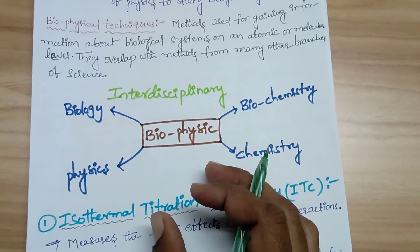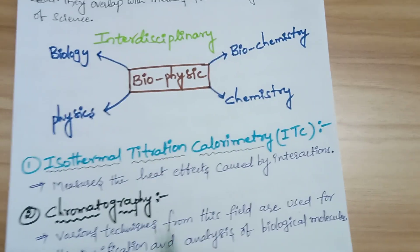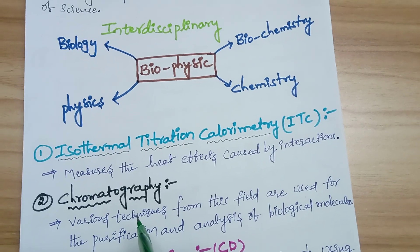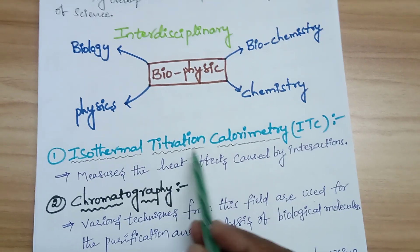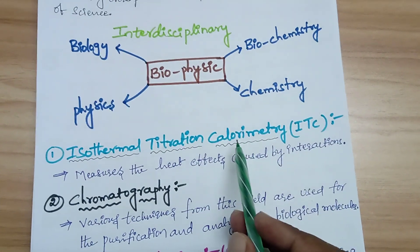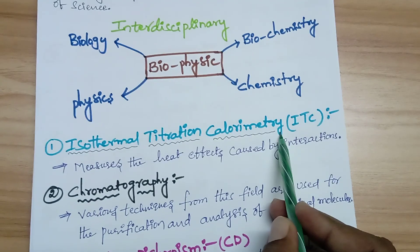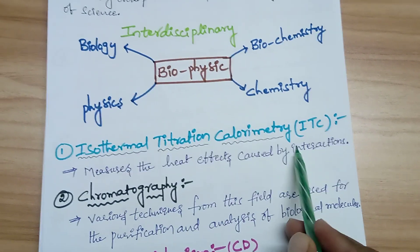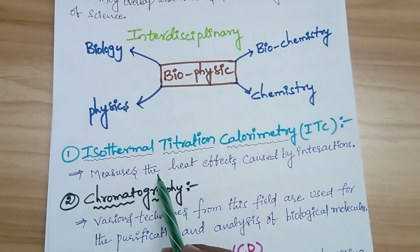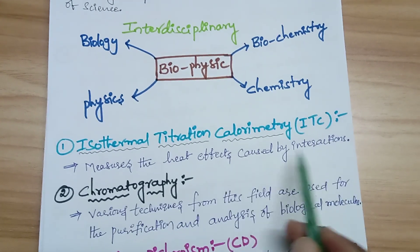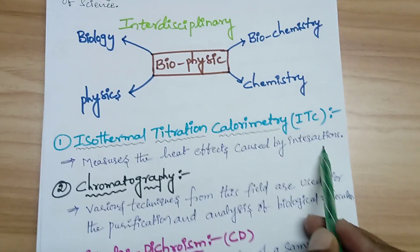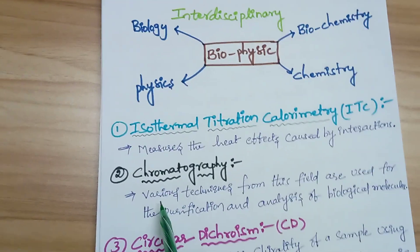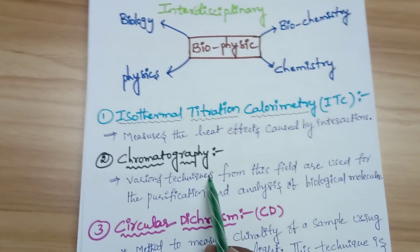The first biophysical technique is ITC — Isothermal Titration Calorimetry. The main purpose of isothermal titration calorimetry is to measure the heat effects caused by interactions, especially in proteins.